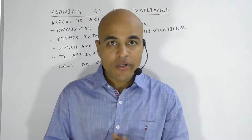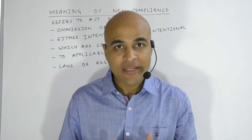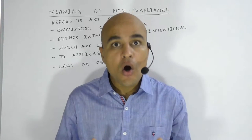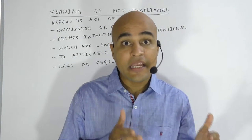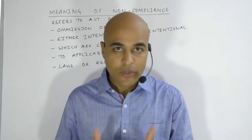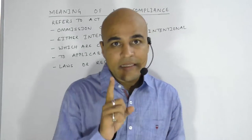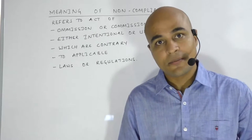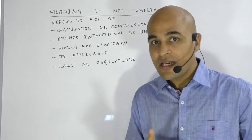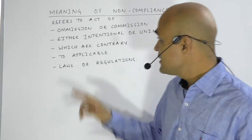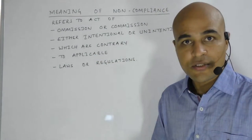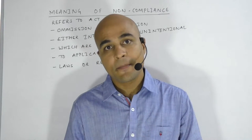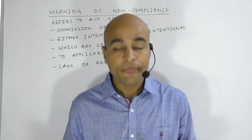Non-compliance with laws and regulations, as per ISA 250, means either I have not complied with laws and regulations, or I have complied with laws and regulations in a manner which is contrary to applicable laws and regulations. That means two things are included here: one is omission, and the second is commission — meaning I have complied with laws and regulations in such a manner that it is contrary to applicable laws and regulations. Further, non-compliance may be intentional as well as unintentional.